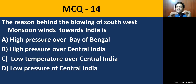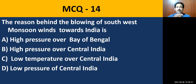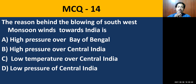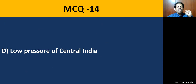MCQ question number fourteen: the reason behind the blowing of southwest monsoon winds towards India. The options are high pressure over Bay of Bengal, high pressure over central India, low temperature over central India, and low pressure over central India. The correct answer is low pressure over central India. Due to high temperature during summer, pressure goes down especially in Madhya Pradesh and central India. Due to this low pressure, winds rush from high pressure areas and divide into the Arabian Sea branch and Bay of Bengal branch — this is the southwest monsoon season.